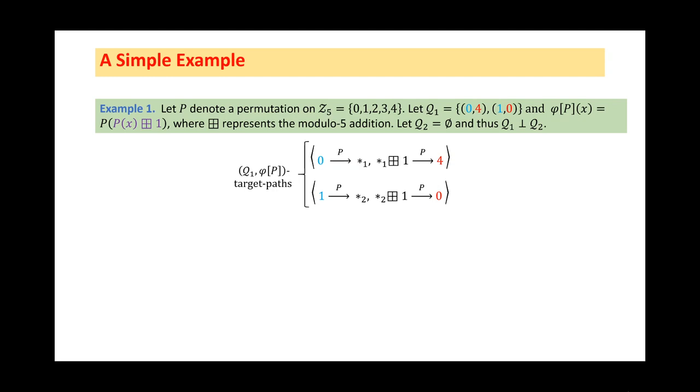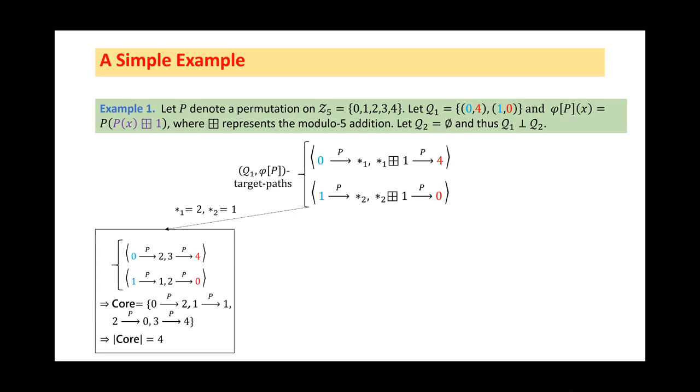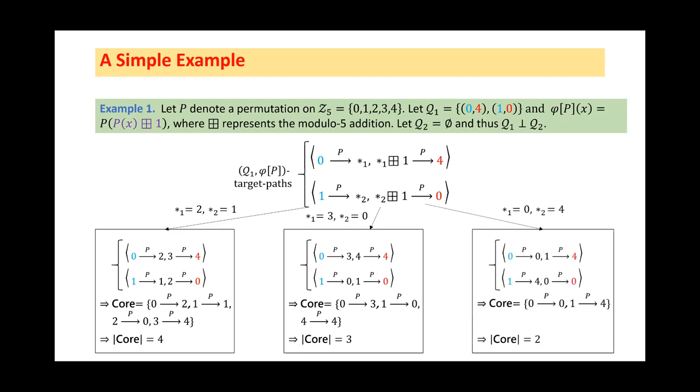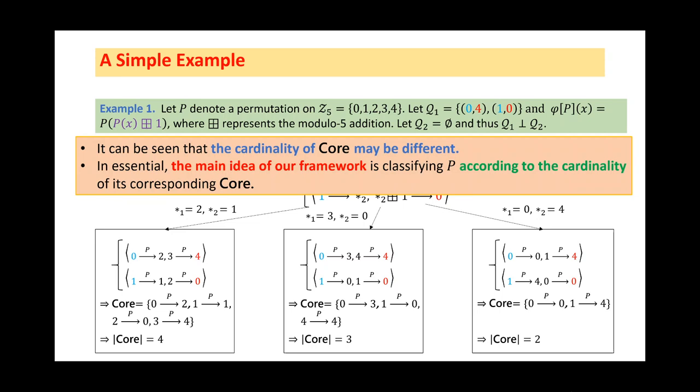It is easy to find several assignments which can complete the two paths. The first case is to let star₁ and star₂ be 2 and 1 respectively. Then, we can complete the two paths as follows, and its core contains four edges. The second case is like this. Then, the two paths can also be completed, and its core only contains three edges. The third case is as follows. As a result, its core only contains two edges. From this simple example, we can see that the cardinality of core may be different.